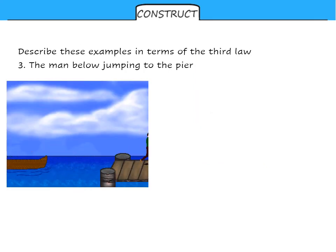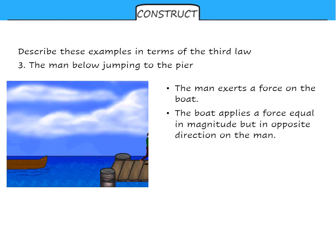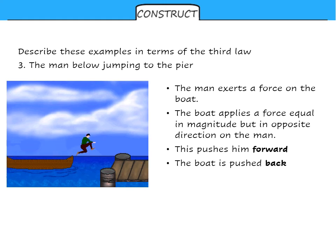And again, number three, man jumping on the pier. The man pushes on the boat, the boat applies an equal and opposite reaction force on the man. The man is pushed forward as he jumps, and the boat is pushed back. A pair of forces, a pair of objects, equal in size and opposite in direction.